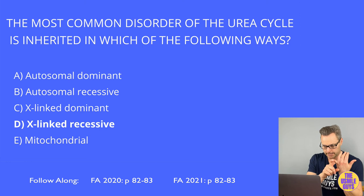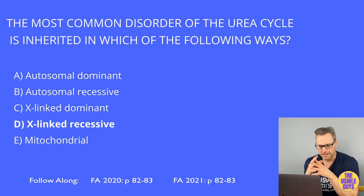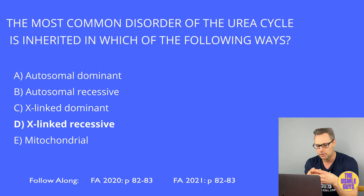Hyperammonemia is managed by limiting protein intake and giving medications that can lower ammonia levels, such as lactulose. You can also give certain antibiotics, as well as drugs that react with glycine or glutamine to form products easily excreted by the kidneys. Lactulose works by acidifying the GI tract, which traps ammonium NH4+ molecules so they can be easily excreted — a commonly tested mechanism.